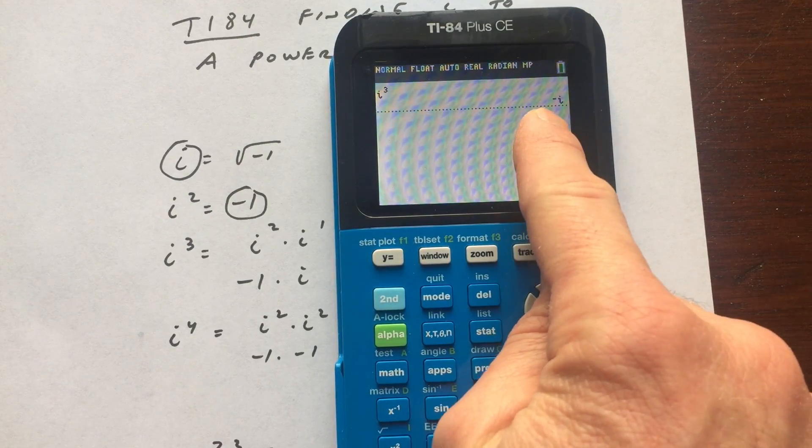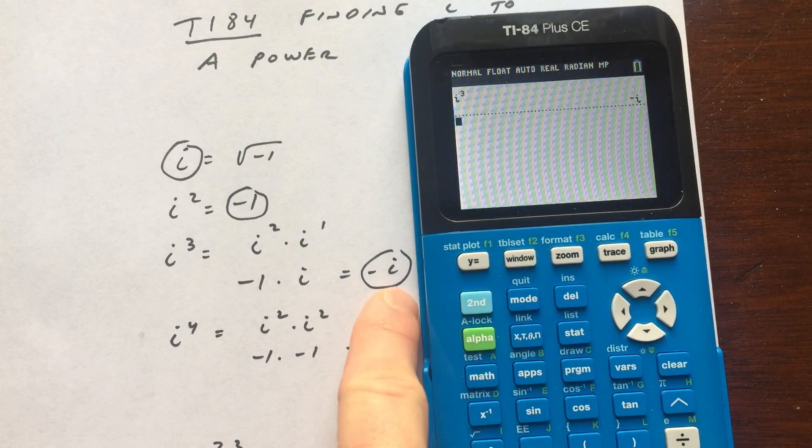So if I press enter, you can see it's giving us the exact answer, negative i. So you can see i cubed here is negative i.